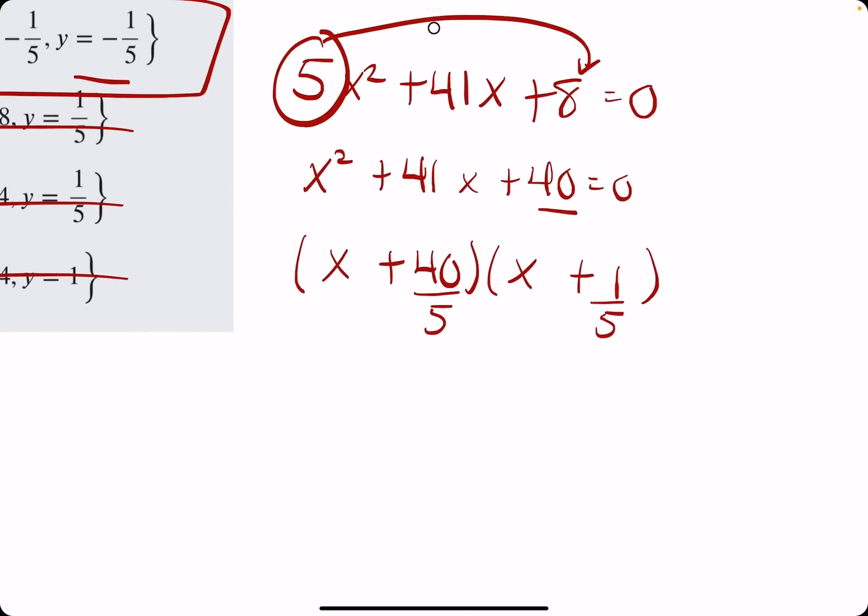If things divide nicely, we divide them nicely. 40 divided by 5 is 8. And then, if they don't divide out nicely, we bring that 5 to the front of the x. And so, now, these should be our factors.